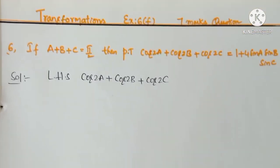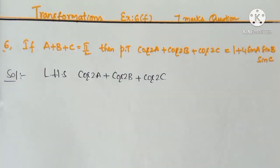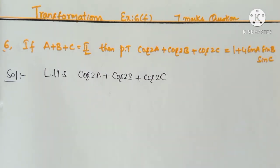Sixth question: If A plus B plus C is equal to Pi by 2, then prove that Cos 2A plus Cos 2B plus Cos 2C is equal to 1 plus 4 Sin A Sin B Sin C.